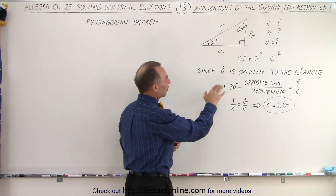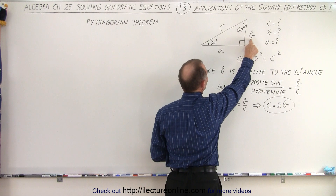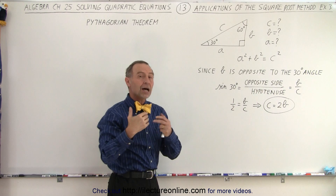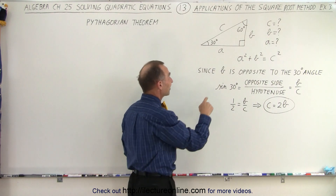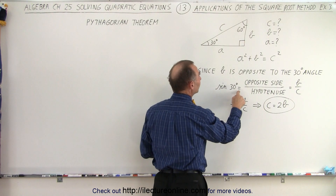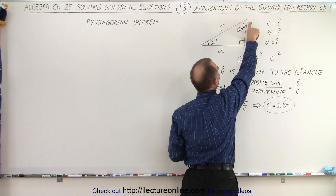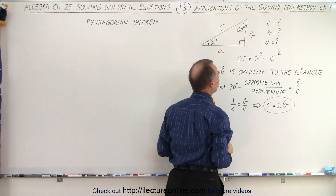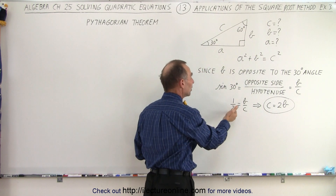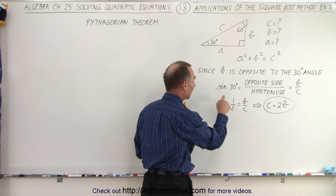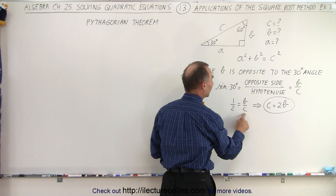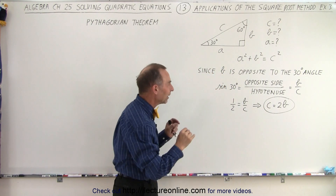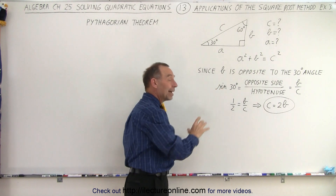Since b is opposite to the 30-degree angle, using trigonometry — which is a little bit beyond what we do here in algebra — we can say that the sine of 30 degrees is equal to the ratio of the opposite side to the hypotenuse. The opposite side is b and the hypotenuse is c. The sine of 30 degrees equals one-half, so one-half equals b divided by c, or c is equal to 2b. That's the relationship I missed by doing this quickly in my head without writing it down.